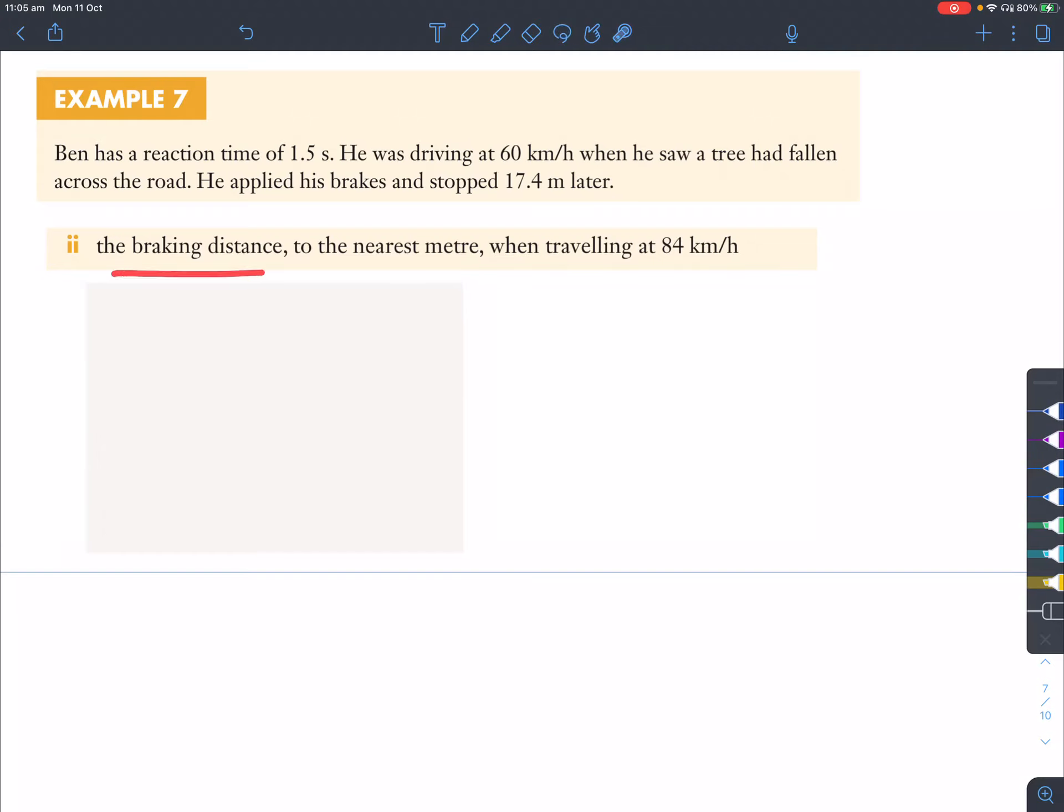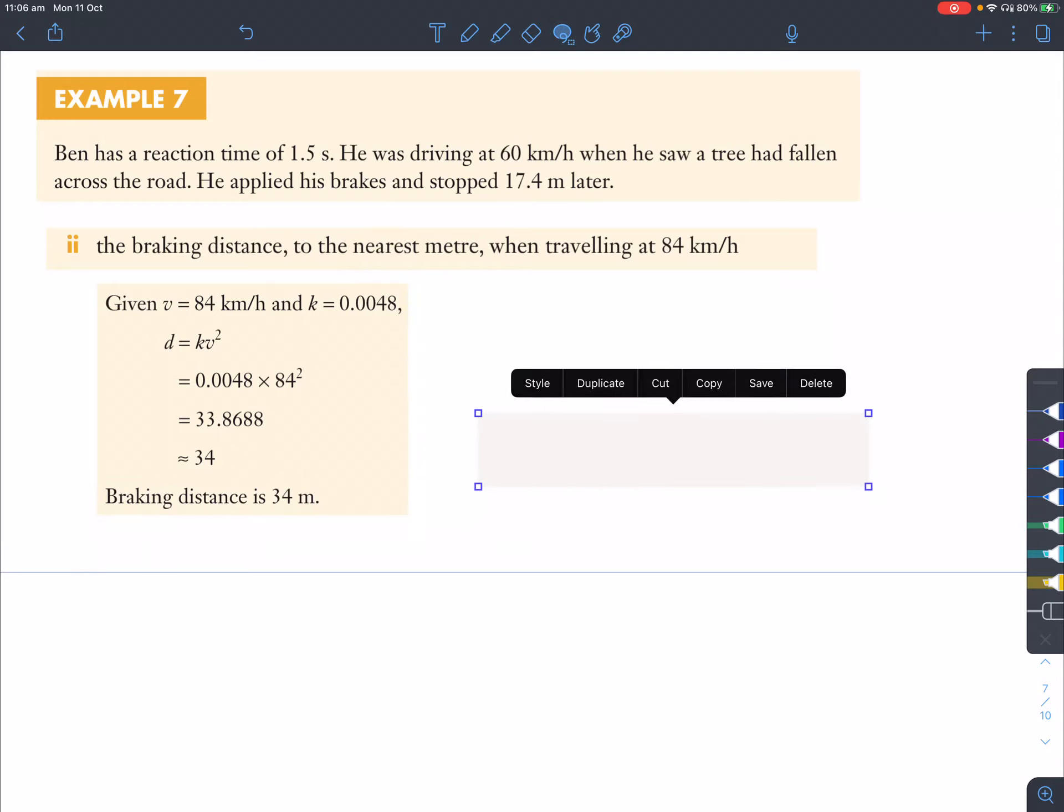So, part two, we've got to find out the braking distance when traveling 84 kilometers per hour. So, what that is here, is our V value, which is our velocity or speed, that's how fast the car is traveling. Our K value, as we saw earlier in part I, was 0.048. So, this is our formula, established earlier, but now we've got our K value as this, our V value as 84 kilometers per hour. So, D, which is our braking distance, is now those two things times together. So, that will return to us 33.8688, I'm sure there's, actually no, there's no more numbers, it's just that, which approximates to 34 meters. That's the nearest meter, since that first number after the dot is 8. So the braking distance is 34 meters.